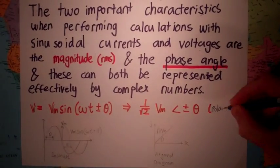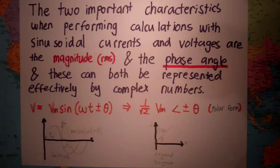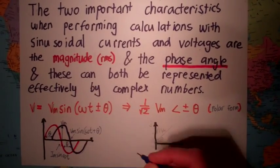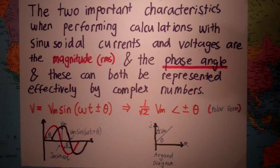As seen here, the waveform function is represented by a complex number in polar form with an RMS value.